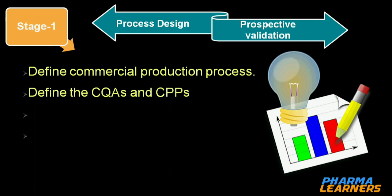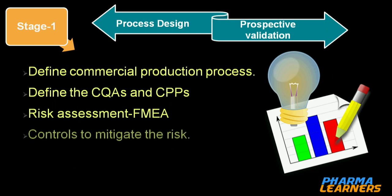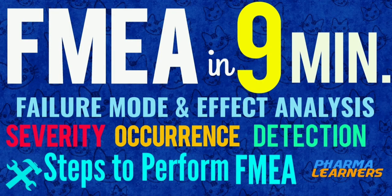That means we define the CQAs and CPPs — critical quality attributes and critical process parameters — which are to be monitored in stage 2. We do the risk assessment and define what controls to put in place to mitigate the risk. For that, we use tools like FMEA, that is failure mode and effect analysis.